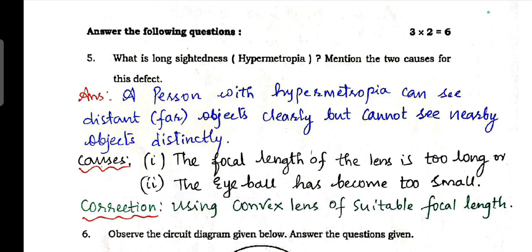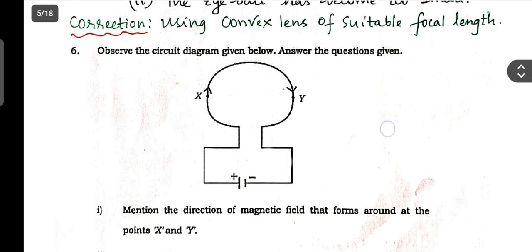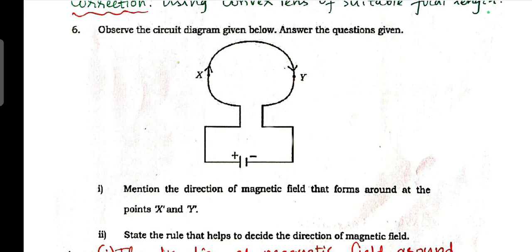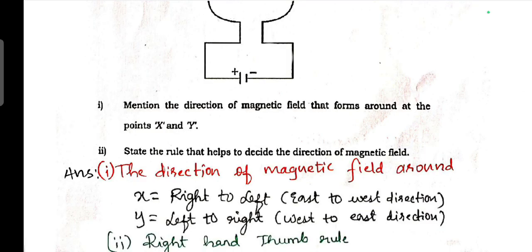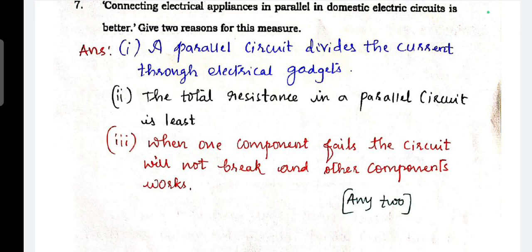Next, three more questions - two more questions, three questions will be there, each carries two marks. What is long-sightedness or hypermetropia? Mention the two causes for this defect. Next, observe the circuit diagram given below, answer the following question. Mention the direction of magnetic field that forms around at the point X and Y. State the rule that helps to decide the direction of magnetic field. So direction of magnetic field around X is right to left, east to west, and Y is left to right, or else you can write anti-clockwise and clockwise. The rule that helps us to decide the direction of magnetic field is right hand thumb rule. Question number seven, connecting electrical appliances in parallel in domestic circuits is better. Give two reasons for this.